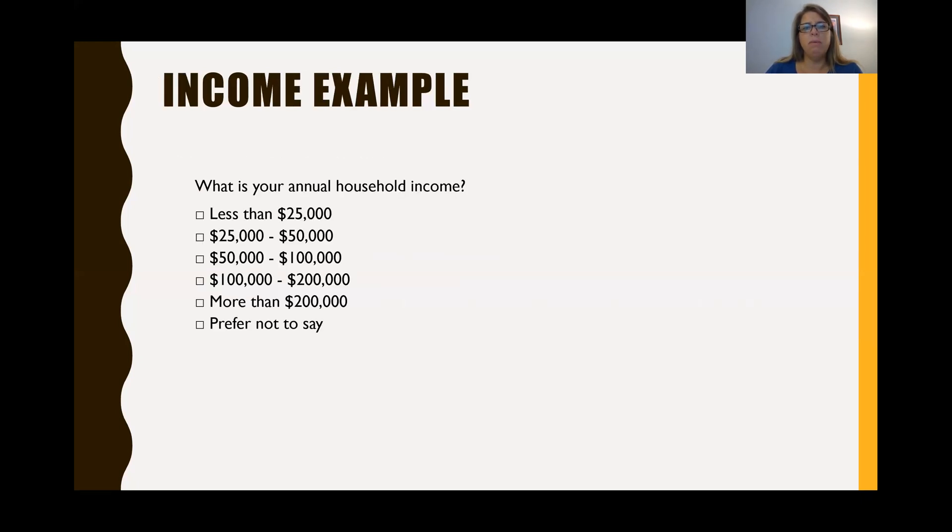So here's an example of what income looks like. What is your annual household income? And then we have our different categories. And how you categorize them depends on the research question you're asking. So you might have different groupings depending on your research question. So if I know I have specific income cutoffs and I'm interested in looking at the data for different groups of income, then I'll want to make sure that those groupings match the data that I want to get.